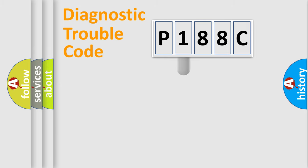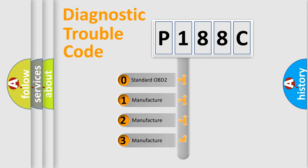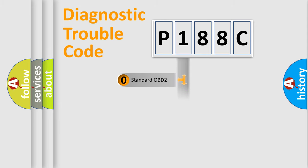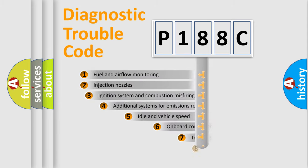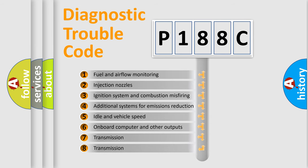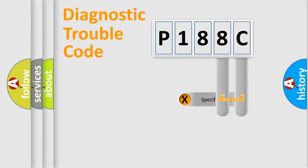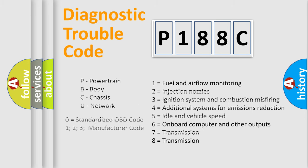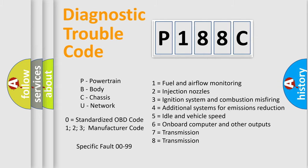This distribution is defined in the first character of the code. If the second character is expressed as zero, it is a standardized error. In the case of numbers 1, 2, or 3, it is a more manufacturer-specific expression of a car-specific error. The third character specifies a subset of errors. This distribution is valid only for the standardized DTC code, and only the last two characters define the specific fault of the group. This division is valid only if the second character code is expressed by the number zero.